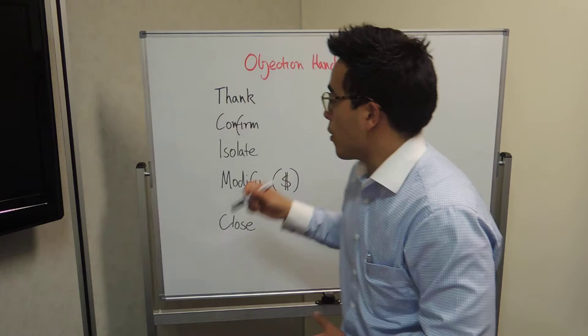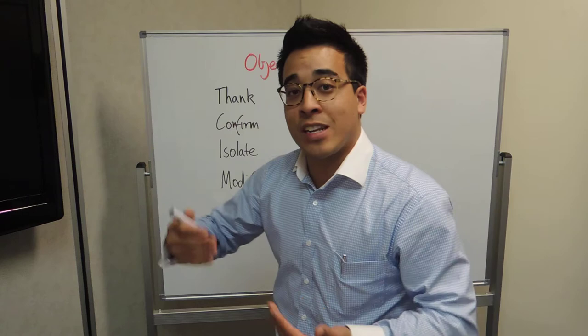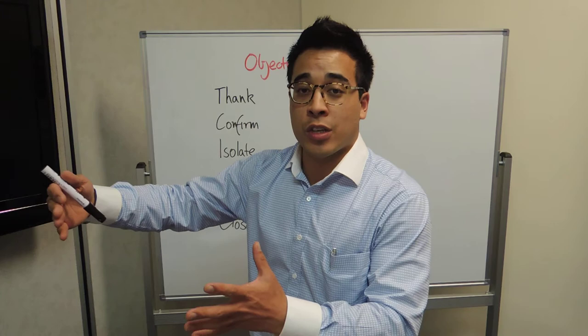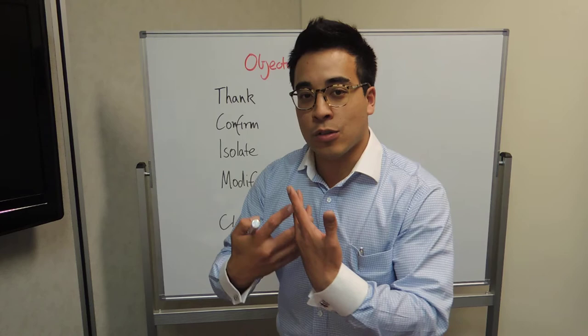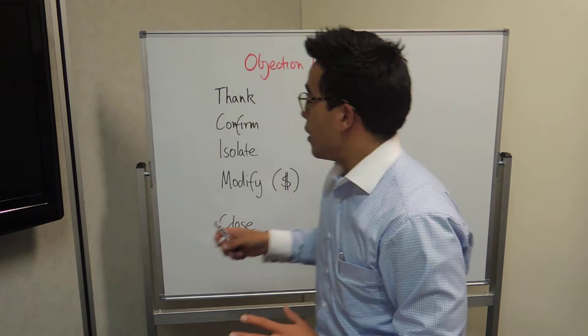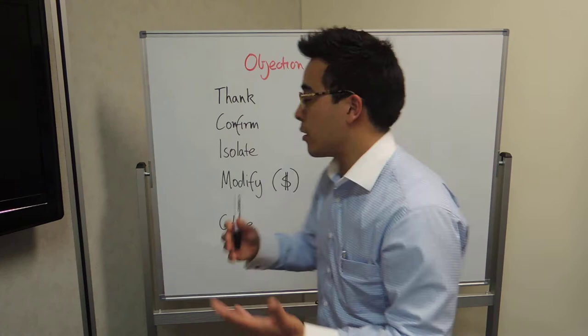So confirm. Then when you confirm it as well, you go, okay, so what I'm hearing is X and you relay exactly what they just told you. You relay word for word or as close as you can. And what that does is once you're going to loosen them up and go, okay, he's listening to me. He's not here to fight me or make me not do my way. They're actually listening to me. So thank, confirm, get them to relay it and then you relay it back to them as well. Let them know that you're listening.